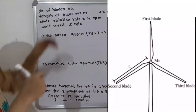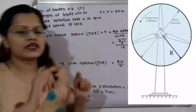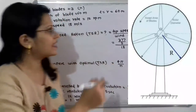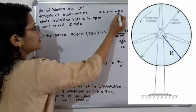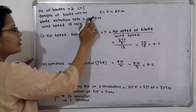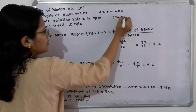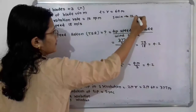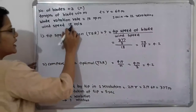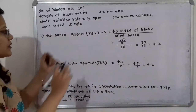Now let us understand the given data. Number of blades n = 3. The length of the blade is 60 meters, which acts as the radius of the circular area, so l = r = 60 m. The blade rotation rate is 12 rpm, meaning 12 revolutions per minute. The wind speed is 18 meter per second. We have to find the tip speed ratio.